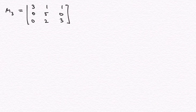Welcome to my series of videos on Mathematics for Economists. In this video I would like to determine the eigenvalues and eigenvectors of a third example matrix given by the rows 3, 1, 1, 0, 5, 0, 0, 2, and 3. We're going to see in a minute that this is an example of a matrix where the usual eigenvalue decomposition doesn't quite work out.